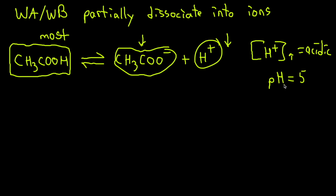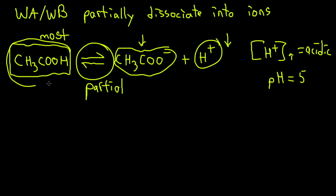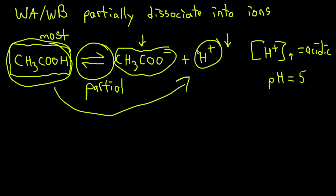Weak bases work exactly the same way. The dissociation is not complete — it is only partial because most of the compound stays in its original form. When an acid is in its regular undissociated form, it has no effect, because the only effect it has is when it actually separates into its hydrogen ion, since the hydrogen ion is the measurement of pH.